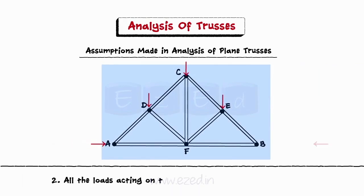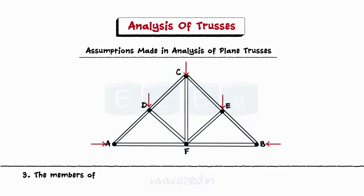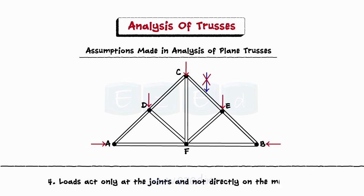All the loads acting on the truss lie in the plane of the truss. The members of the truss are joined at the ends by internal hinges known as pins. Loads act only at the joints and not directly on the members.